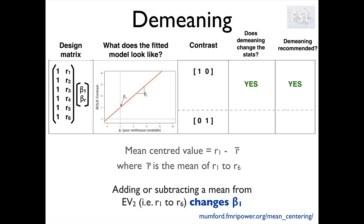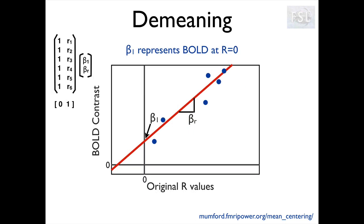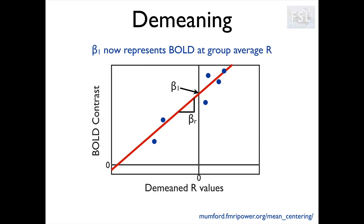Now if we look at the zero-one contrast, it means that we are interested in the correlation with age rather than wanting to control for it, so we are now interested in beta r. This is the version of our plot with no demeaning, and we can see that beta r corresponds to the slope of the fitting line. Now this is what happens after demeaning: as you can see, the slope stays the same, so beta r doesn't change.